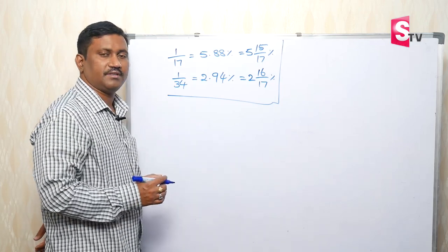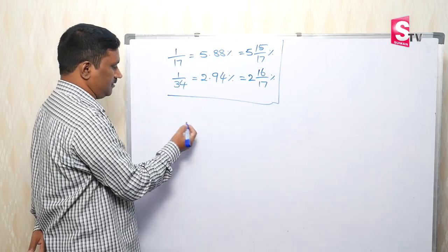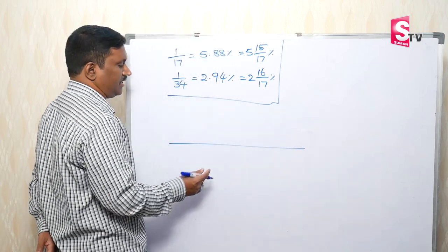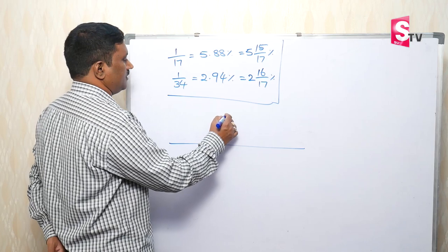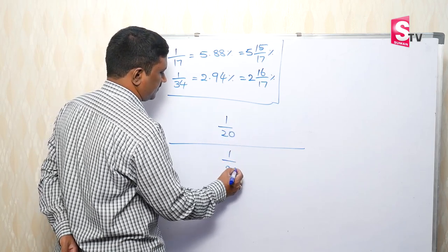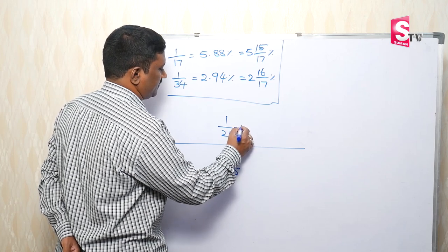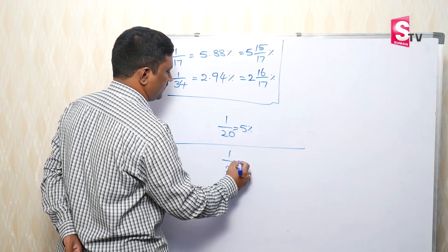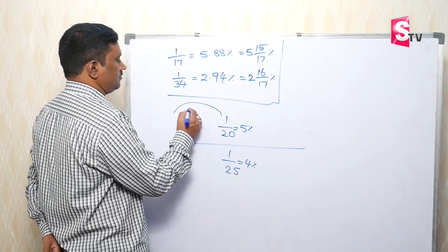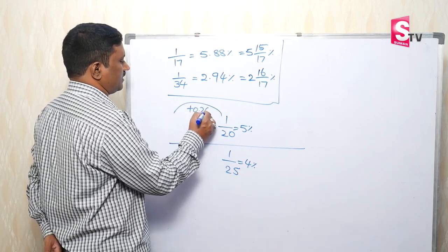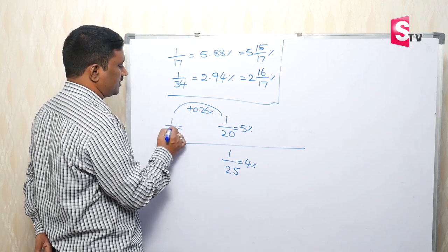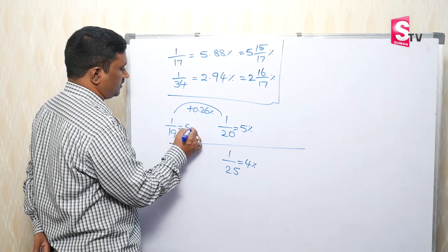So, after that, 1 by 19. We will get 1 by 19. From 1 by 19, we will get 1 by 20 and 1 by 25. 1 by 20 is 5 percent, 1 by 25 is 4 percent. So, this is 5.26 percentage — the 1 by 19 values.